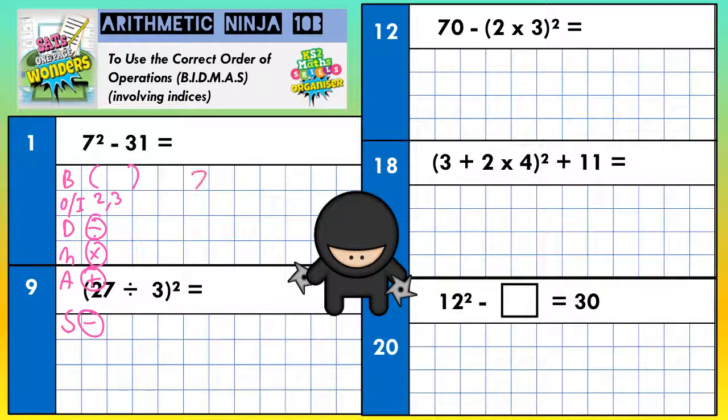So here we go, 7 squared minus 31. You've got to do your squared first, because that's highest on the list. 7 times 7 is 49, minus 31. 49 minus 31, if you can't do it in your head, use a column method. 9 take 1 is 8, 4 take 3 is 1. So it looks like it's going to be 18. So question number 1 is 18.